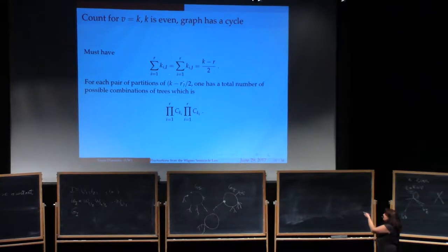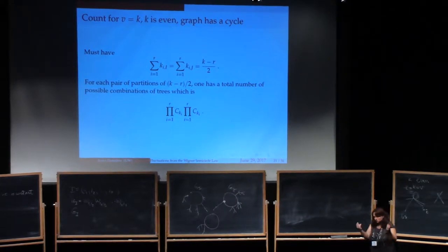So that means that once you've decided on a partition of the number k minus r over 2 for wi and one for wj, then you have to choose the trees from amongst all of those trees with prescribed size. They have to be rooted because you care where you place them or how you place them on the cycle. And of course, what's the number of unlabeled rooted trees of size k sub i? ck sub i. So once you've decided on partitions, the total possible combination is given by this product of cki, cki. So this is a square, actually.